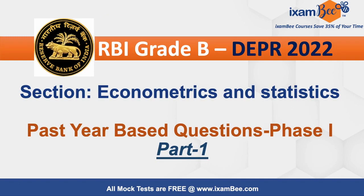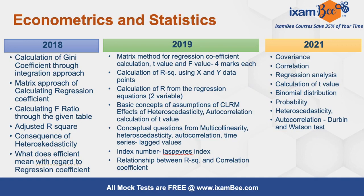Today in this video, we are going to discuss past year-based questions for econometrics and statistics. For econometrics and statistics, the questions are distributed into 1, 2, and 4 marks. For 2 and 4 marks, the negative marking is 50%, so we have to be very careful while attempting these questions. These are the few topics that have been asked from econometrics and statistics in past years, which we already discussed in the previous video. Now let's move to question number 1.